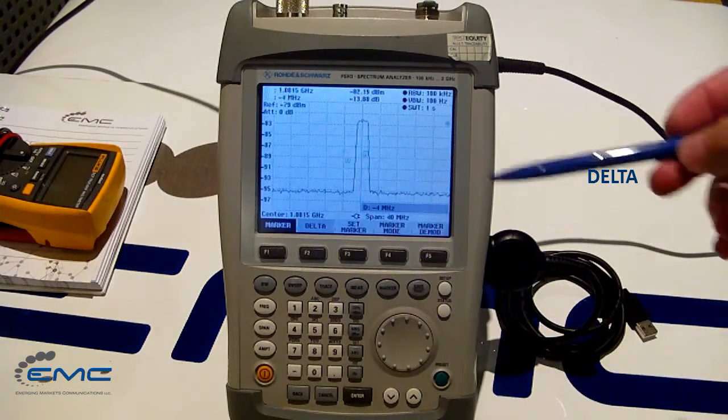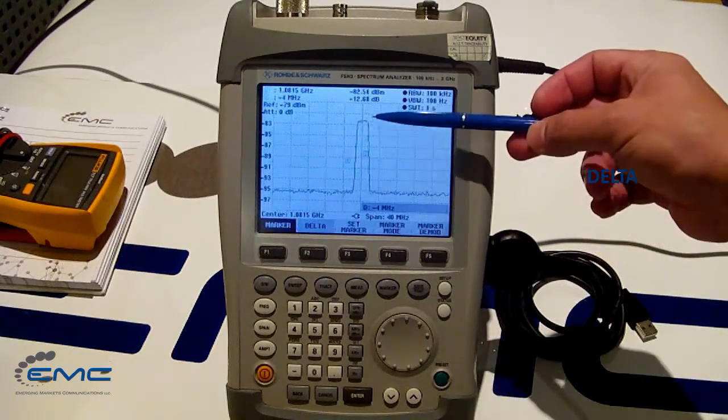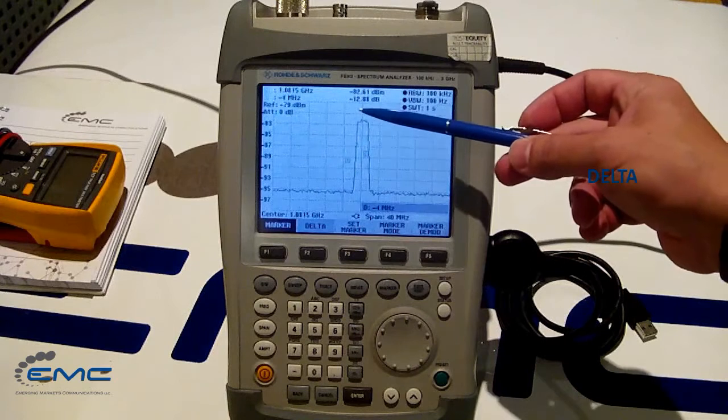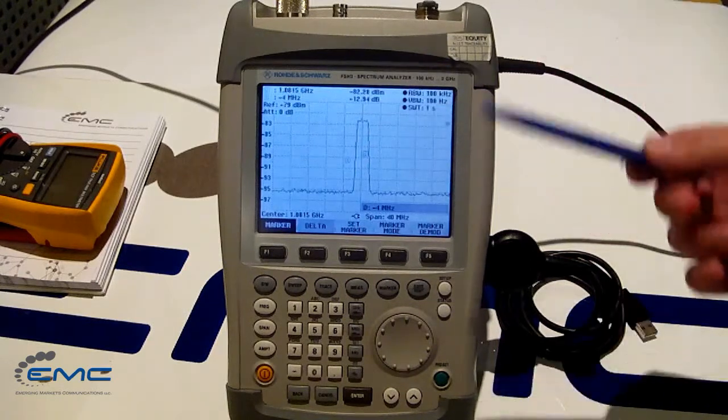So from here you can see that carrier to noise measure we have is 12.9 dB.